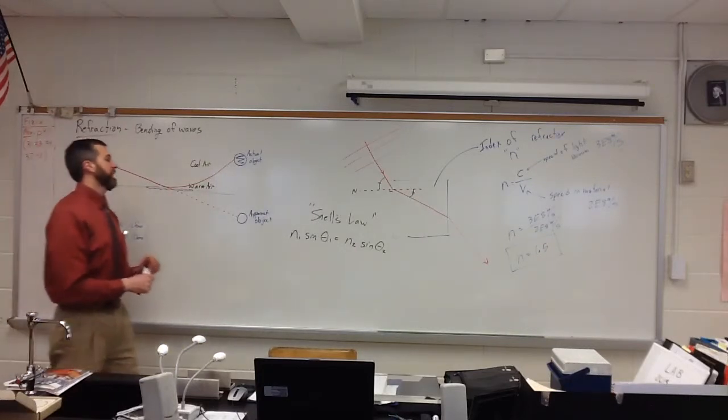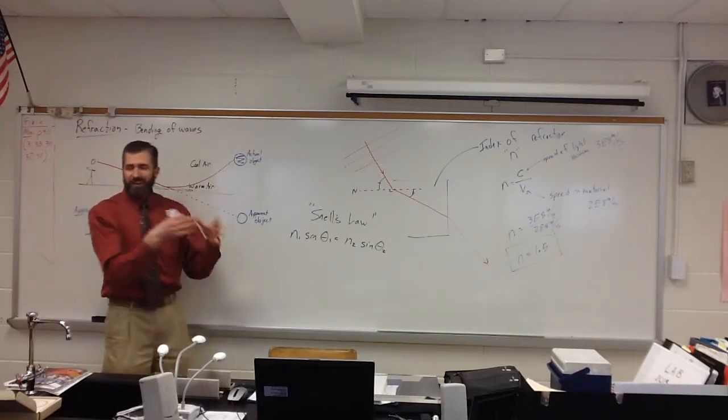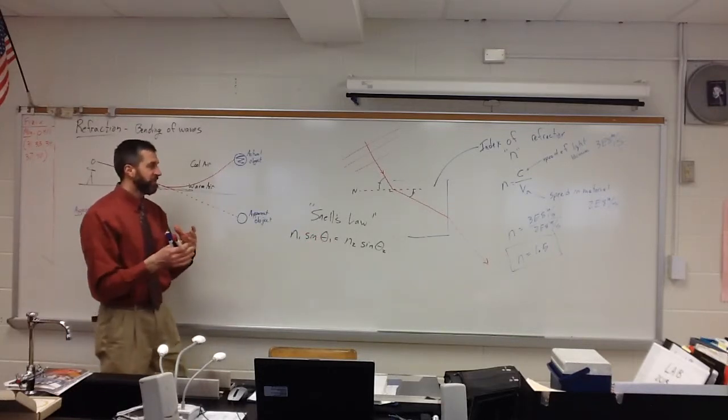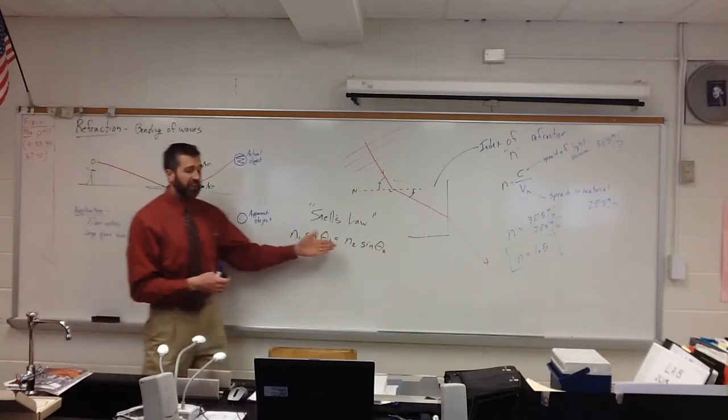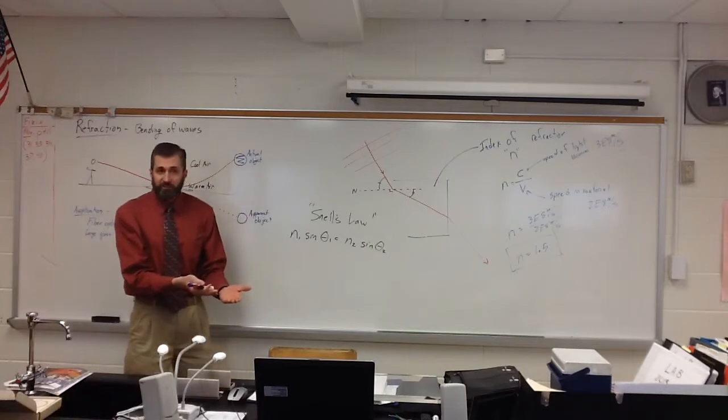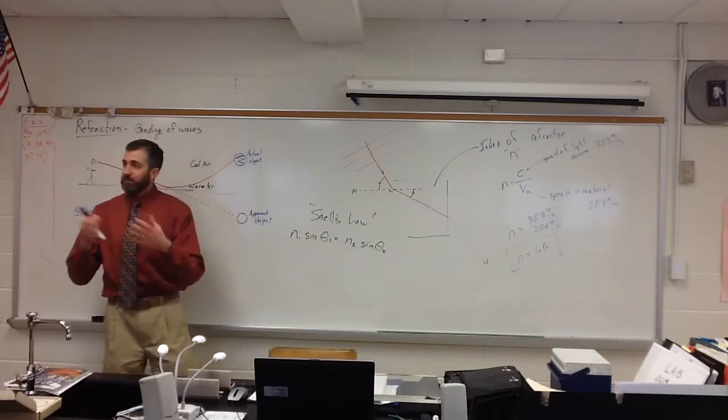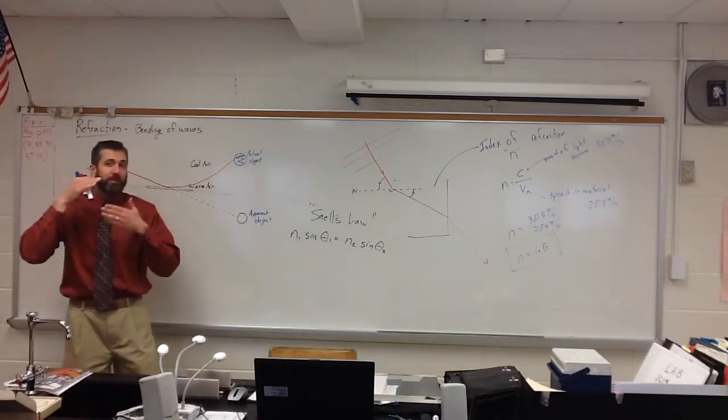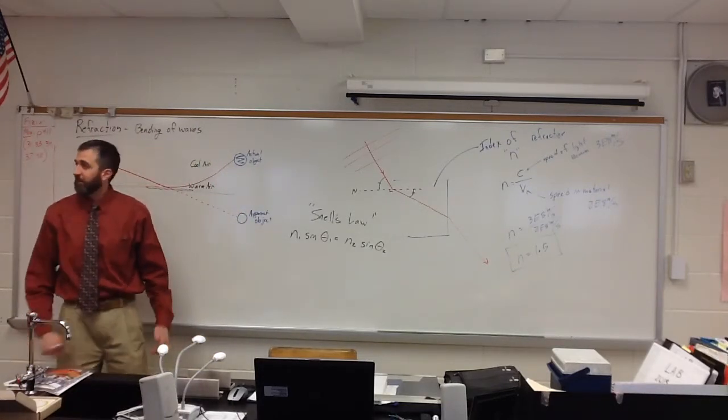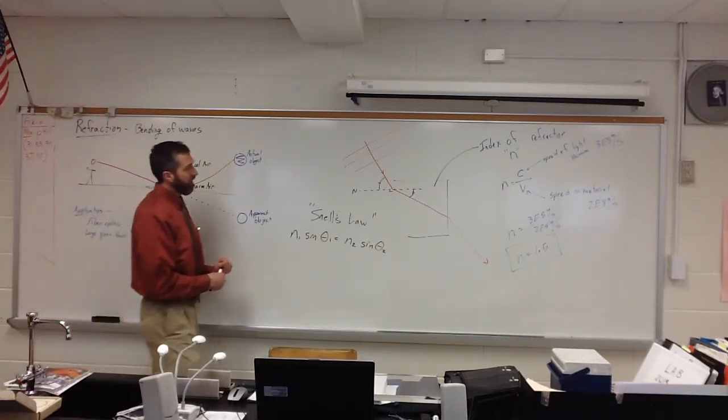This guy was Willebrord Snell. That was his name. And he came up with this law that related N values and angles so that you could determine how much light was going to be bent by. And this is like, this all leads up to why you can have contacts or glasses. Because if he hadn't figured out how much light gets bent by certain materials, then they wouldn't be able to figure out how much to bend the light so that you can see clearly. Okay? So he's the guy that kind of came up with all this stuff. Really important work right here.